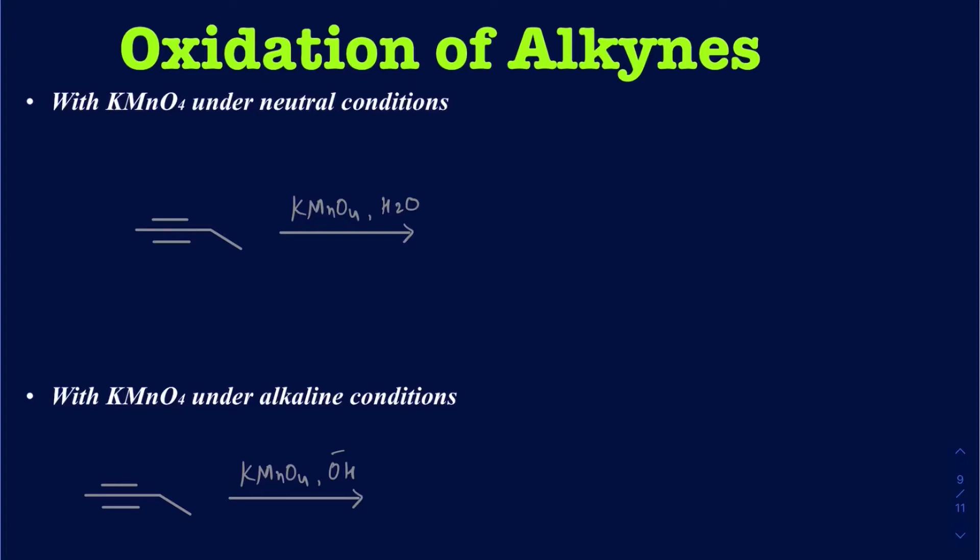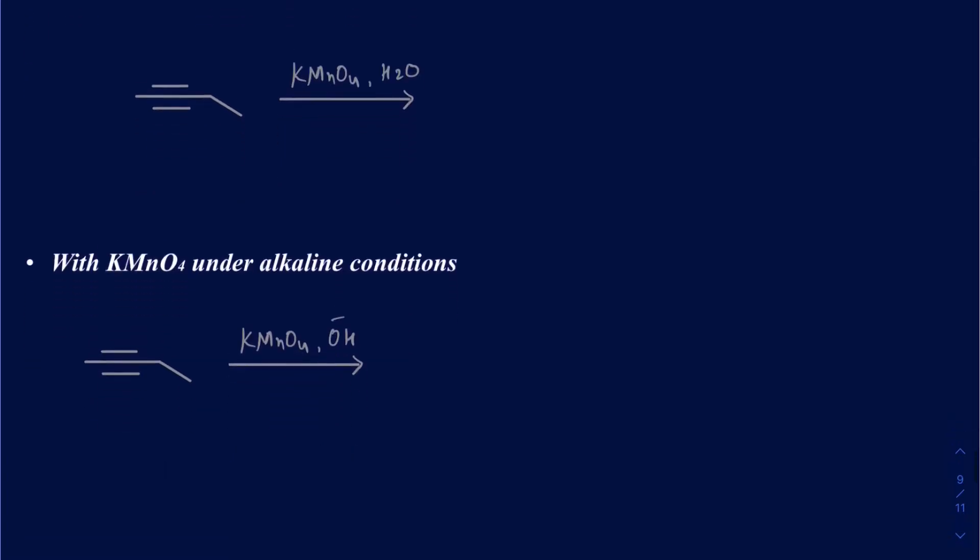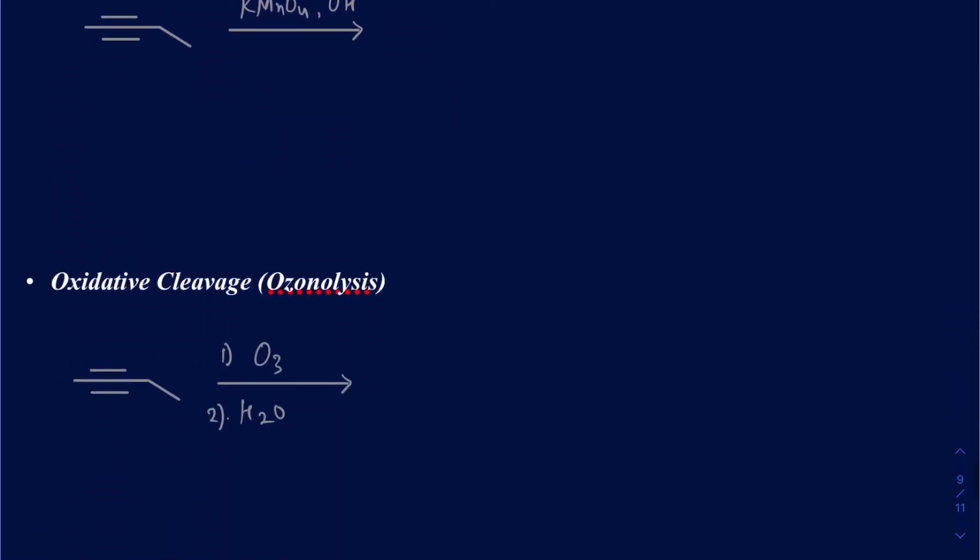Hello everyone. In this video, we're going to be talking about oxidation of alkynes. We're going to be learning three different ways how you can oxidize alkynes. The first two ways are using KMnO4 potassium permanganate, and then we're going to be looking at using ozone.